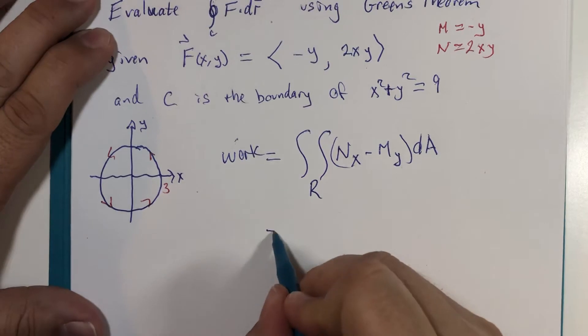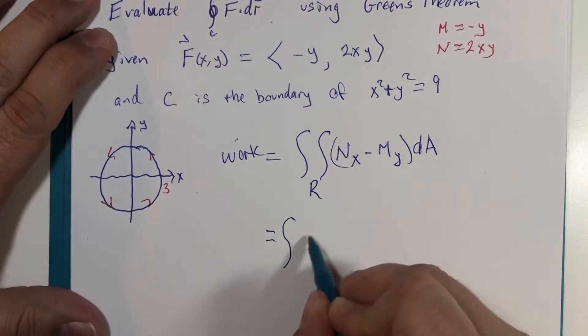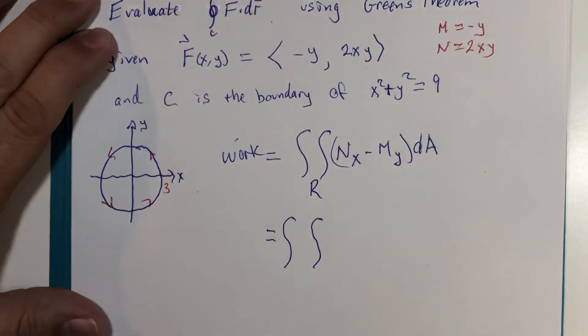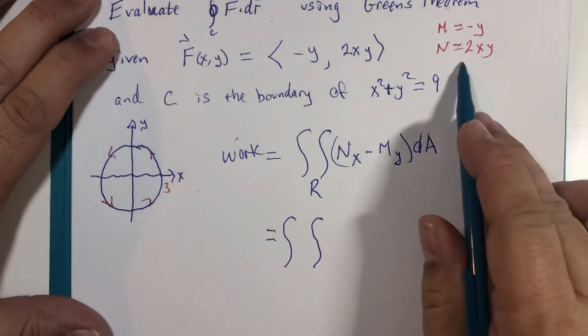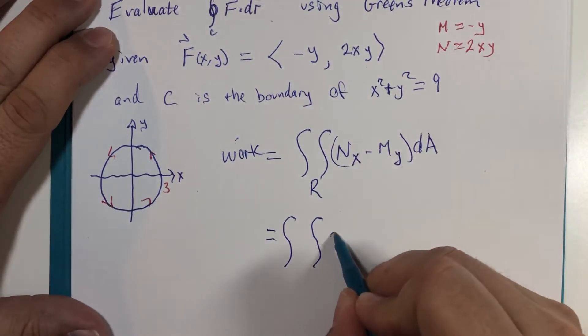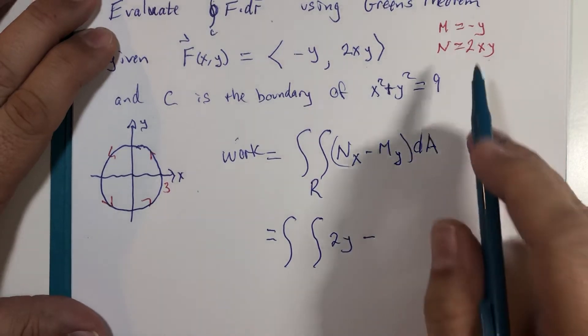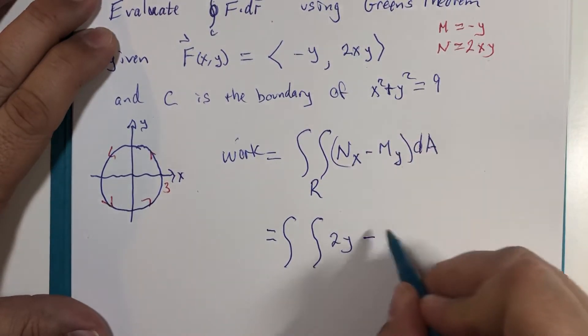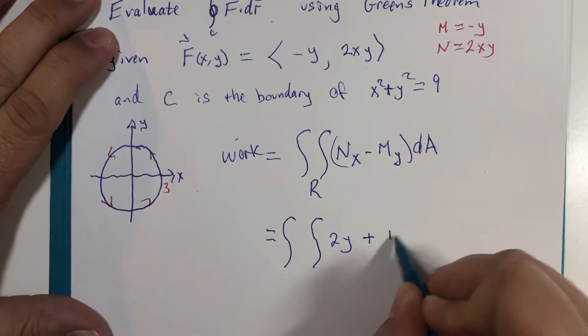So this is going to become double integral. N with respect to x is 2y minus M with respect to y is negative 1, so that makes this actually plus 1.